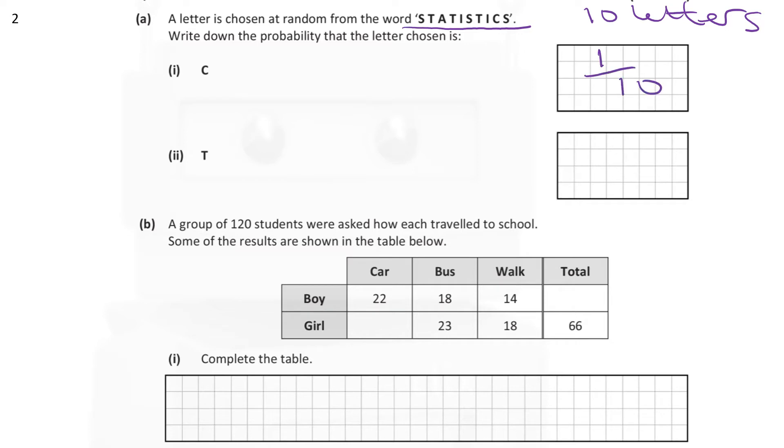The probability of the letter chosen is T. That's going to equal 3 out of 10. Again, there are 3 T's: 1, 2, 3. So 3 out of 10.